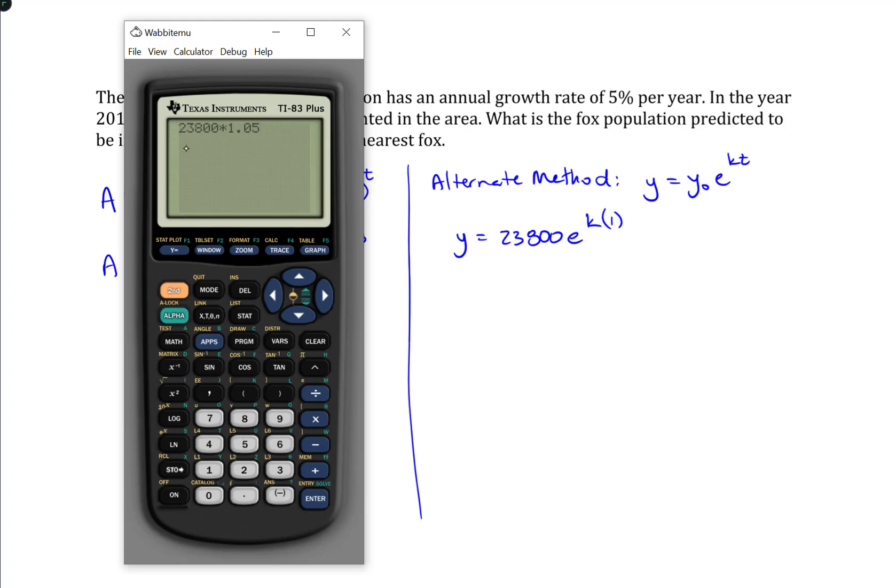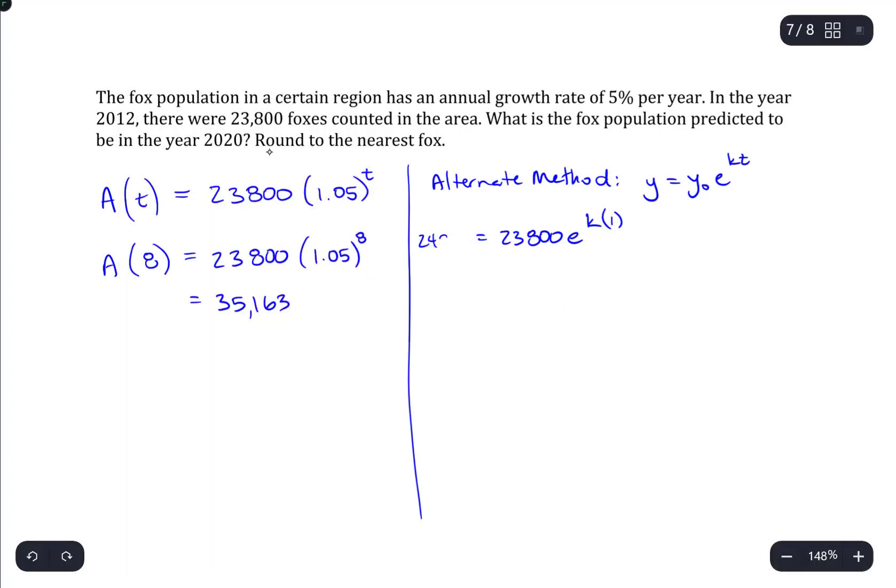So, if you multiply by 1, the number of foxes stays steady. If you multiply by 1.05, it increases by 5%. So, that would be 24,990. I'm going to set this equal to 24,990 instead.